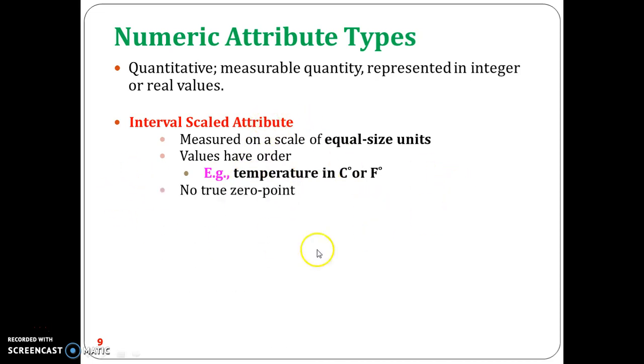However, in interval-scaled attributes there is no exact zero point. Another example is a calendar: consider the year 2002.